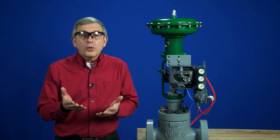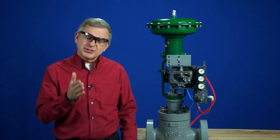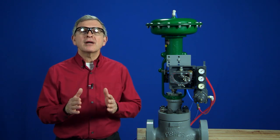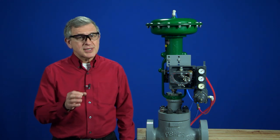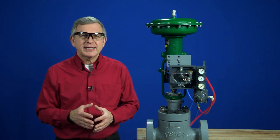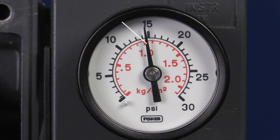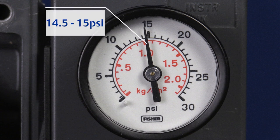Our goal is to make the positioner saturate just inside the upper limit of our input signal. That is, in this case, 15 psi. So when it saturates, ideally, it should be between 14 and a half and 15 psi.